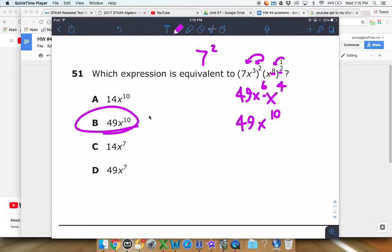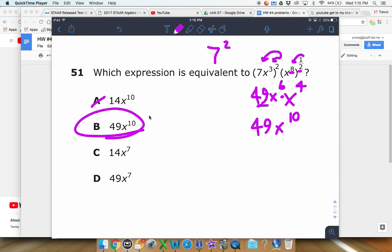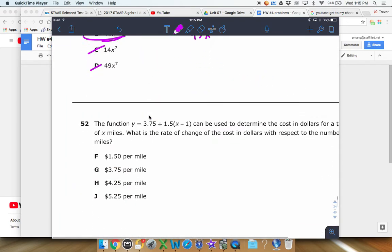Now as far as some of the other answer choices, be careful. Answer choice A - someone might select A if they do, instead of the 49 right there, if they do seven times two instead of seven raised to two. Seven times two would get you that 14. That's the only difference there. As far as the powers go, I'm not sure how you could get x to the seventh. But be really careful with this seven squared part right there that gets you a little 49.